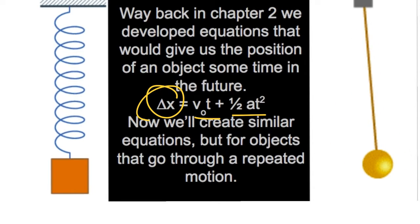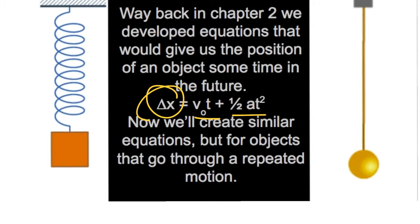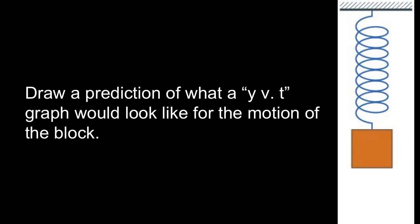Back and forth — by knowing initial conditions we could figure out exactly where it's going to be. We can find out how fast it's going and what the acceleration of the object would be. Before we move on, think about what a y versus time function would look like as this mass oscillates up and down — what would that graph look like for that block?